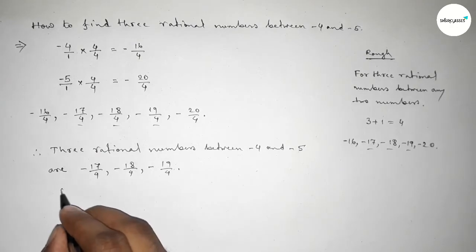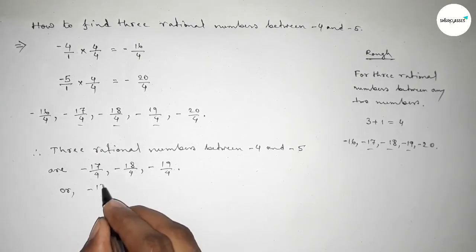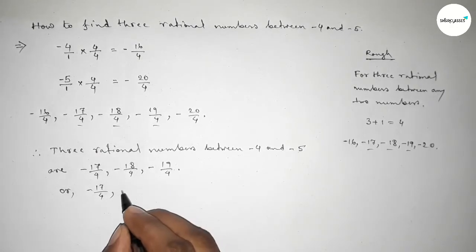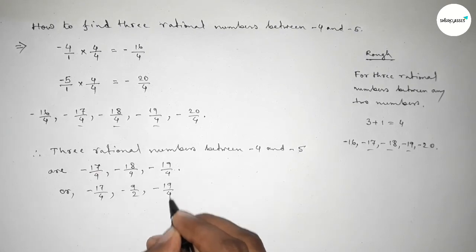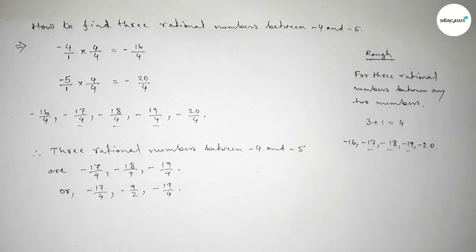Or we can write -17/4, and if you divide both numbers by 2, then this is -9/2, and this is -19/4. So that's all. Thanks for watching. If this video is helpful to you, then please share it.